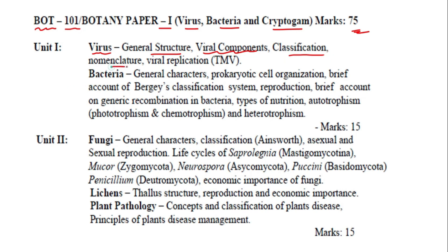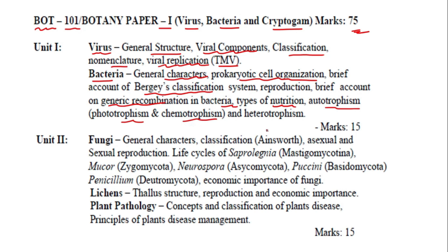We'll also cover how viruses replicate — viral replication of TMV — and in bacteria: general characters, prokaryotic cell organization, a brief account of Bergey's classification system, reproduction of bacteria, brief account of genetic recombination in bacteria, and types of nutrition: autotrophism, which includes phototrophism, chemotrophism, and heterotrophism. Each unit will carry 15 marks.